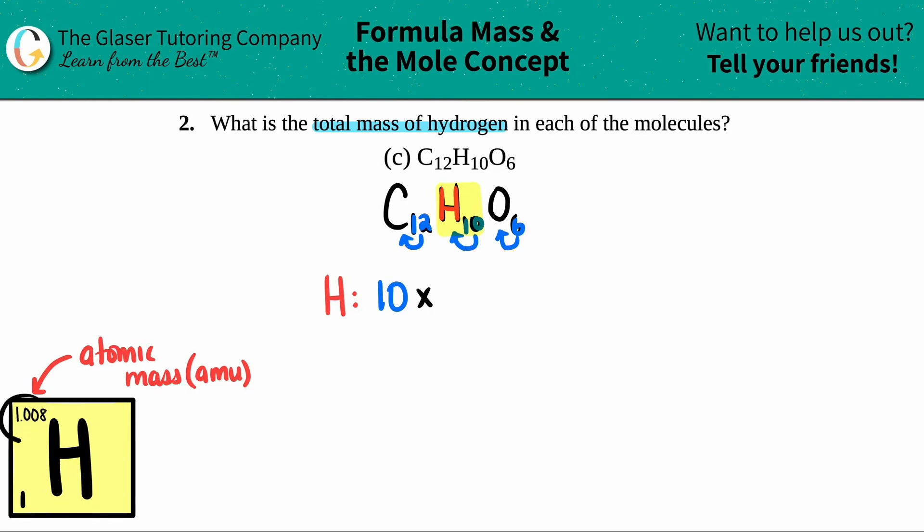So now all we have to do is just take that number and times it by how many I have. So in this case, I have 10. So 10 times 1.008 AMU. And that's the total mass. So 10.08 AMU.